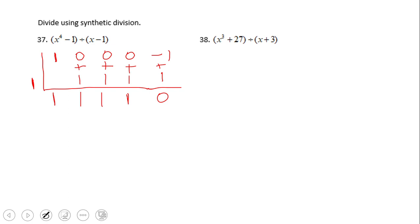So what is this answer here? We divided a polynomial that is 4th degree by x minus 1, so this one will be 3rd degree. 1x cubed plus 1x squared plus 1x plus 1. This is the answer of that division. Do not forget to use these 0s if you do not have the terms. So go ahead and try number 38.